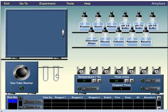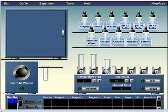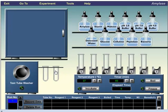Let's assume the instruction asks me to take seven tubes, so I'm going to take one, two, three, four, five, six, seven. The instruction says in tube number one add amylase.